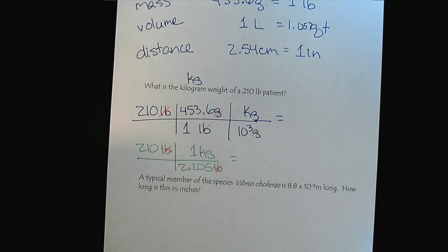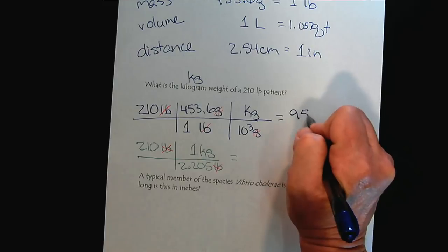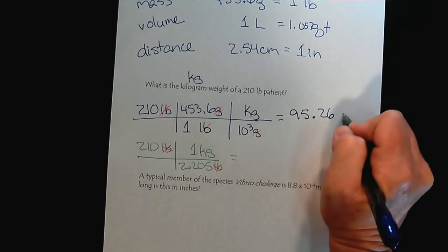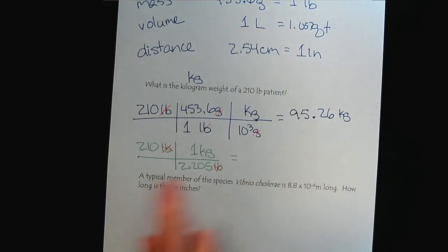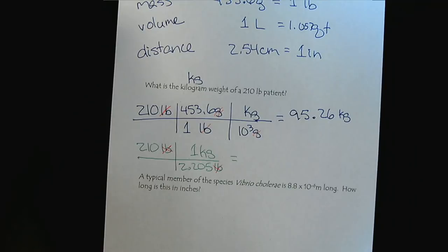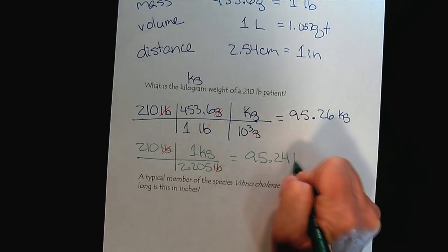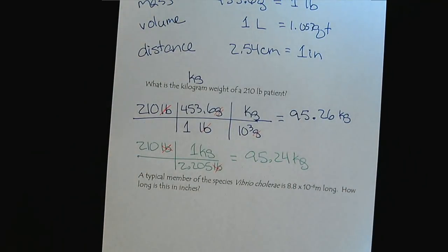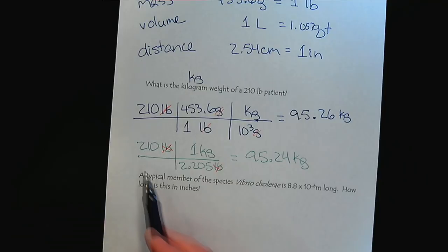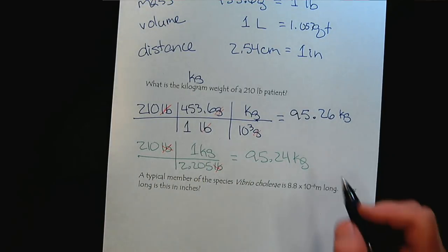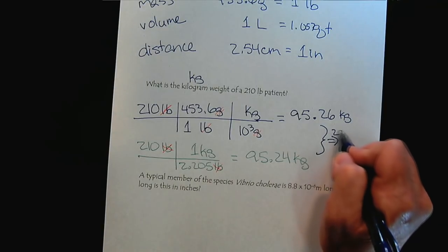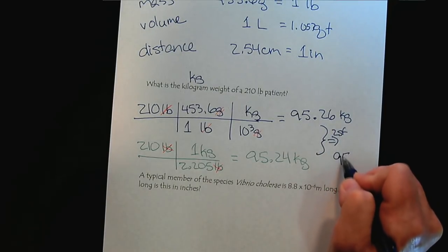So I'll punch the values in for the first calculation. And we see that this patient weighs 95.26 kilograms. Or if we use the alternate method, we see that we get 95.24 kilograms. But now let's bring in our sig figs. And so in both cases, we would report two sig figs. And so notice that when we go to two sig figs, we get the exact same result, 95 kilograms.